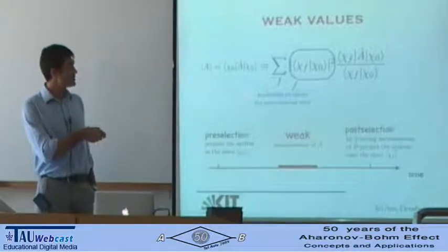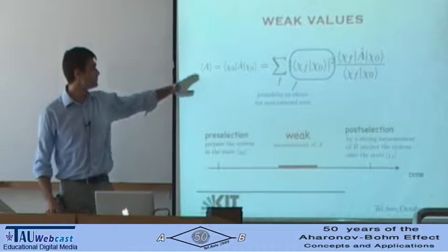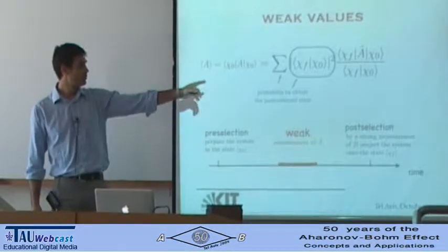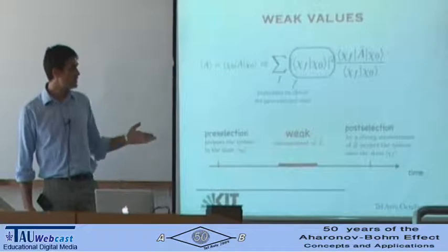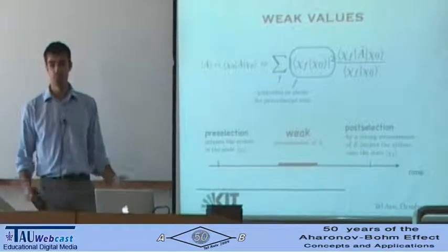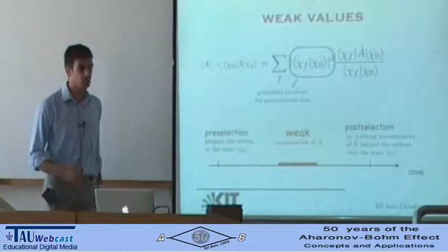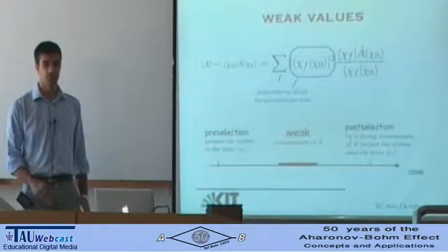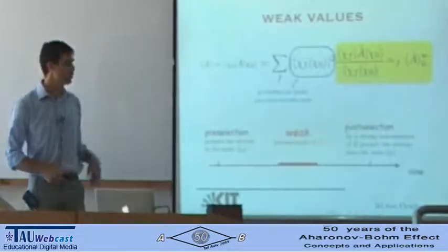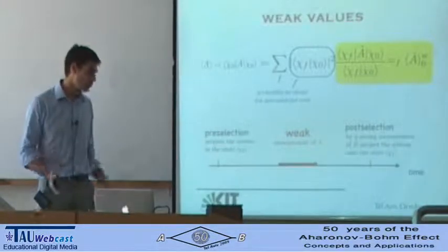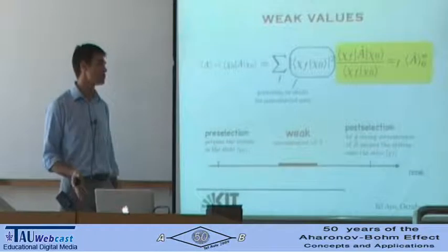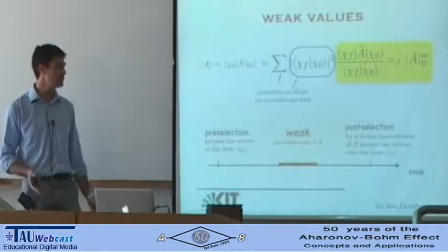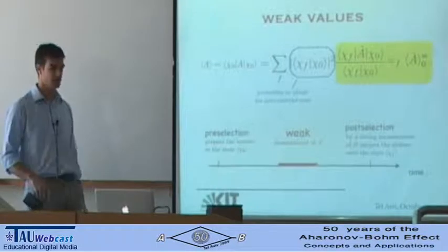Therefore, reading this equation, it tells you that the average value of A is obtained as a sum over different outcomes of the probability to obtain that outcome times something else, which you would naturally like to interpret as the conditional average of A, conditional to the outcome of chi-zero after the second measurement. This is what they call the weak value. And indeed, if you perform a more rigorous calculation, that's the outcome: the value of A conditional to the outcome chi-zero-f is indeed the one highlighted.